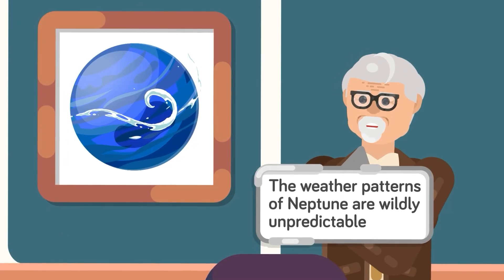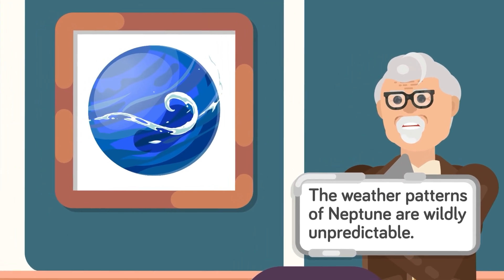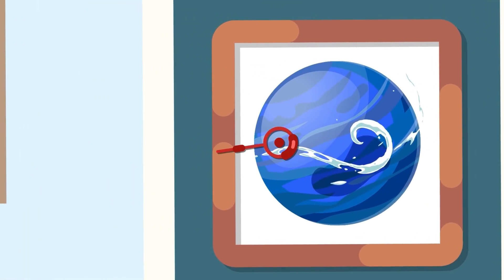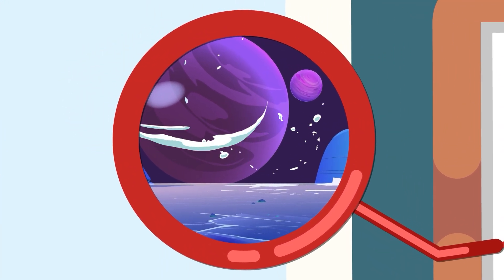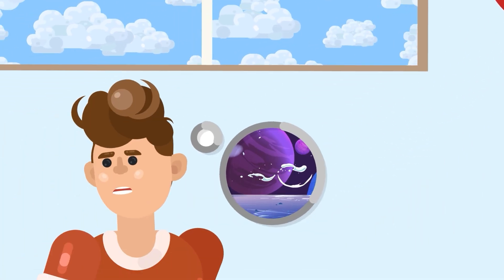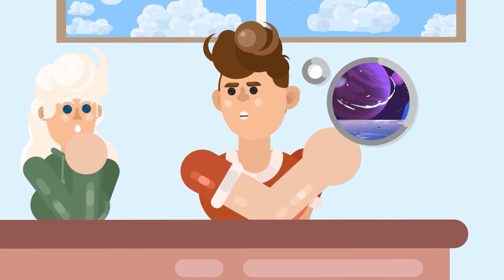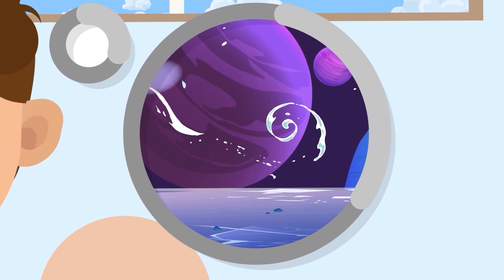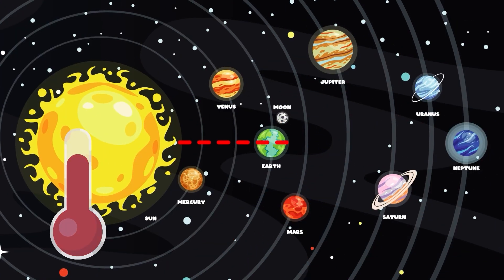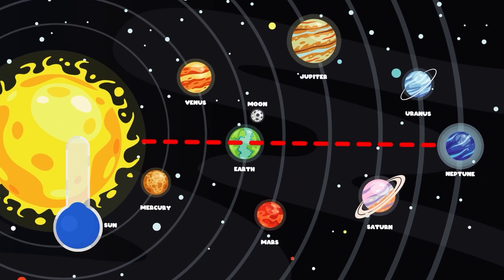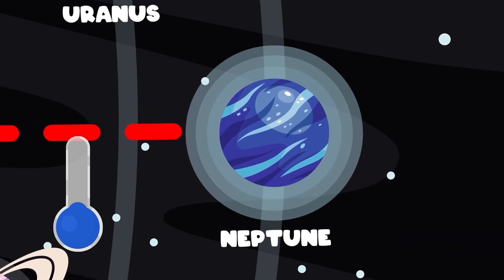The weather patterns of Neptune are wildly unpredictable, with many intense storms occurring in the ice giant's southern hemisphere. The fastest storms in the solar system. Many of Neptune's storms can last several years before dissipating, particularly within the area known as the Great Dark Spot. Neptune is, unsurprisingly due to its distance from the sun, a very cold planet.